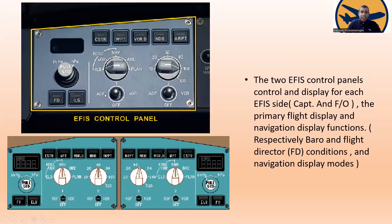The two EFIS control panels — you can see ILS, VOR navigation, rose mode, arc mode, plan mode, ADF, VOR, flight director, and ILS. The two EFIS control panels control and display for each EFIS side — one for the captain and one for the first officer — the primary flight display and navigation display functions, including barometer and flight director conditions, and navigation display modes.